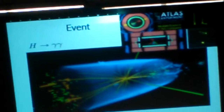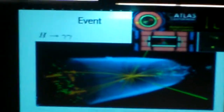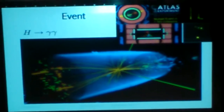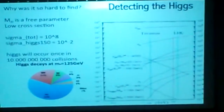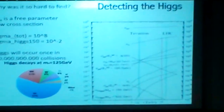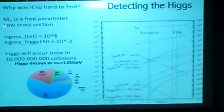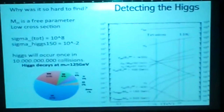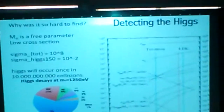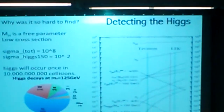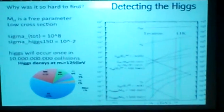When the Higgs decays into two photons, these bumps arise because the Higgs has a specific mass. Why is it so hard to find? Because the mass of the Higgs is a free parameter — it took a long time to find because you didn't really know where to look, and it could be anywhere. The Standard Model doesn't predict the mass of the Higgs.